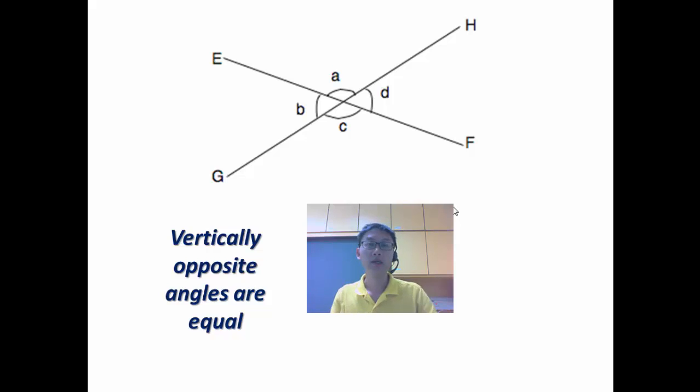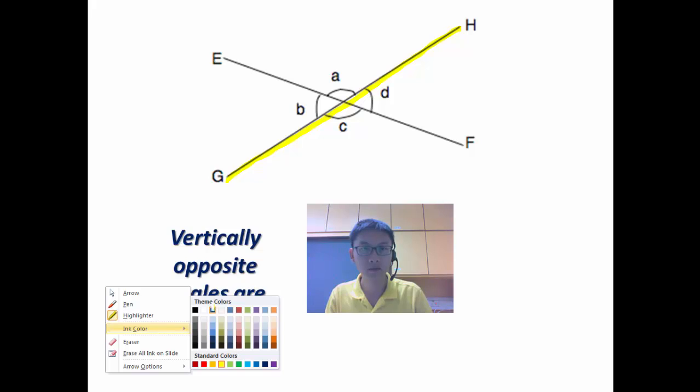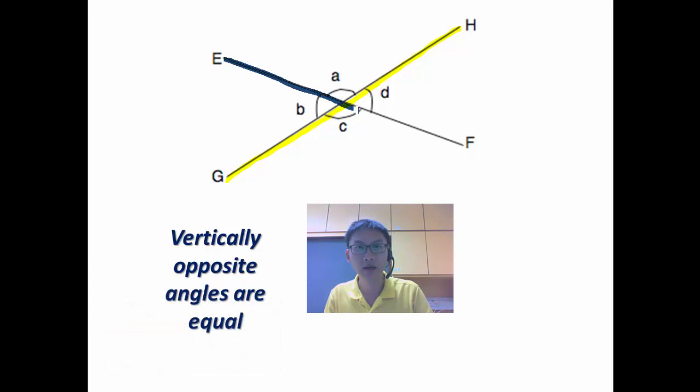So let's move on. Now let's say I'm given these two straight lines, EF and GH. Please take note, vertically opposite angles can only happen when it's two straight lines. So I have EF here and I have GH there. So I've got two straight lines. Now when they intersect,